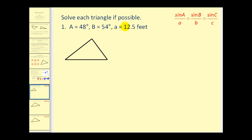We want to solve the triangle where angle A is 48 degrees, angle B is 54 degrees, and side A has length 12.5 feet. Now it's not important that our triangle is to scale, but what is important is that if we call this angle A, this must be side A. If we call this angle B, the opposite side must be side B, and if this is angle C, this must be side C.